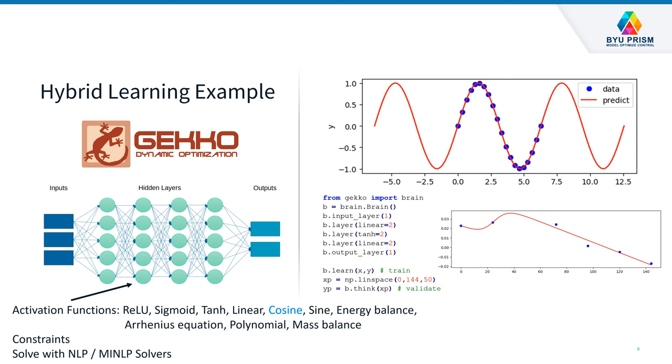So this is an example from the Gecko optimization suite, where we're going to embed not just a rectified linear, sigma-layer hyperbolic tangent, or linear layers, but we're also going to embed something like a cosine activation function. And you can see here that in this example that we're going to go through together, you'll see that by embedding a priori or fundamental knowledge into the system, like maybe you have a daily cycle, you can get better extrapolation and better model performance.